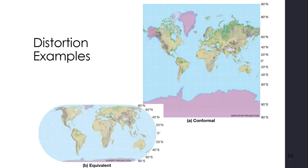And here are some distortion examples. So you have here is an equivalent where the size is preserved, but not necessarily the shape. And here you have, again, that Mercator projection where the shapes are preserved, but the size is really distorted. So again, Greenland here is much, much smaller than Africa, as opposed to when we look at it here, it looks almost equivalent in size.